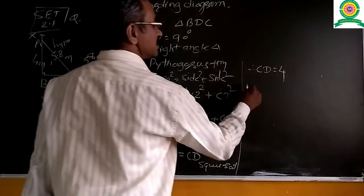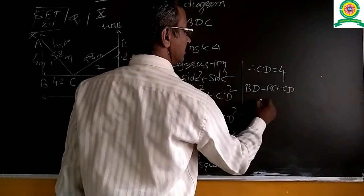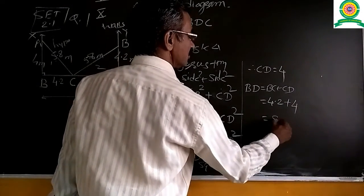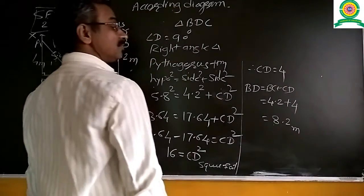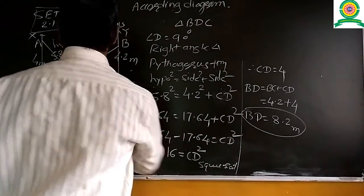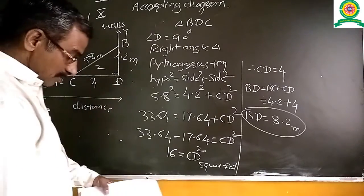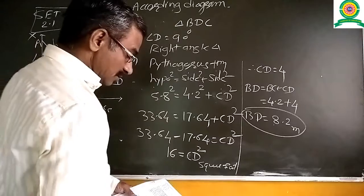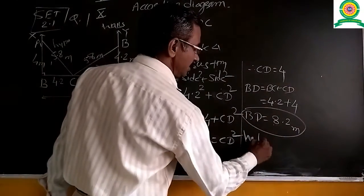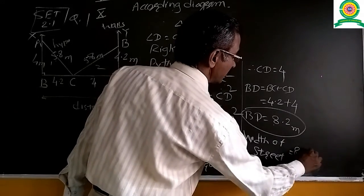We want the distance BD. BD = BC + CD = 4.2 + 4 = 8.2 metres. So the total distance between the two walls, or the width of the street, is 8.2 metres.